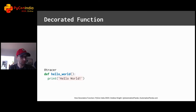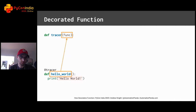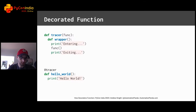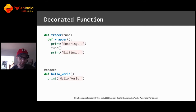So what exactly is this decorator? Tracer is just another function, but it's special because it takes in a function as an argument. Since Tracer decorates hello world, the hello world function is passed into Tracer as an argument. This decorator has an inner function named wrapper — yes, you can do that in Python. The wrapper function prints 'entering', calls the function originally passed into the decorator, and then prints 'exiting'.